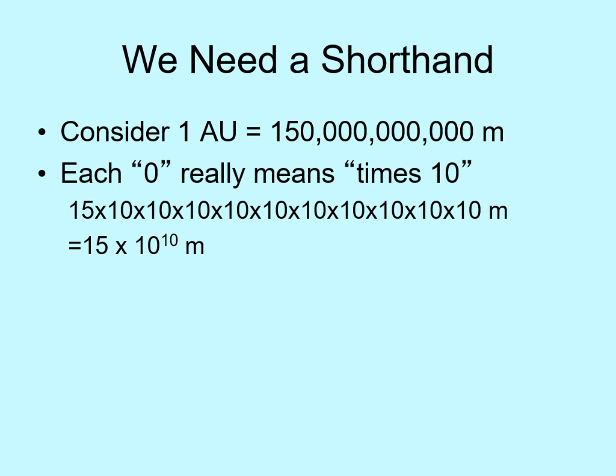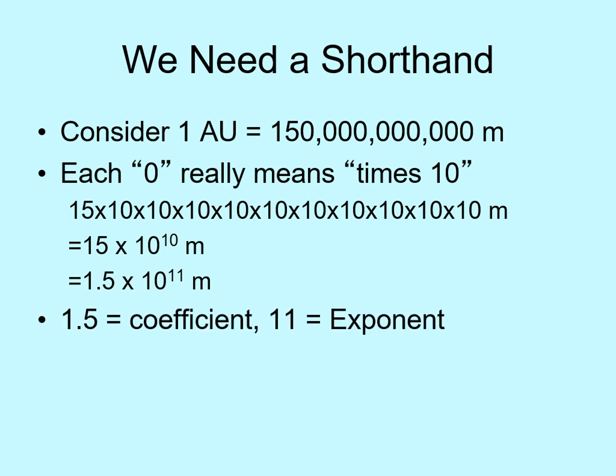We're almost done — there is just one more change we need to make. We like to write these things with just one digit to the left of the decimal place. To do that, we have to turn the 15 into 1.5. Since we're taking out a factor of 10, we need to put it back in somewhere else, so we put it in the exponent. That gives us 1.5 times 10 to the 11th power meters. The little number above the 10 is the exponent, and the number out front is called the coefficient.